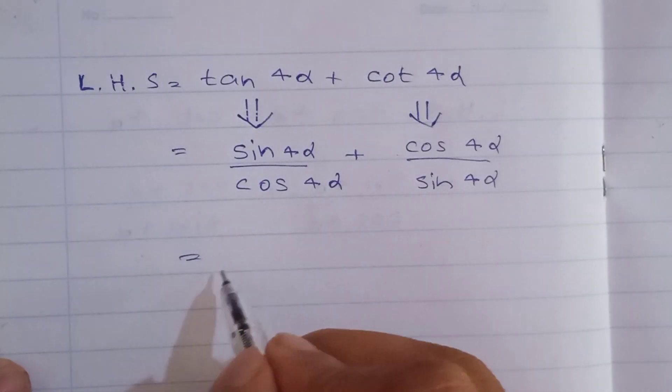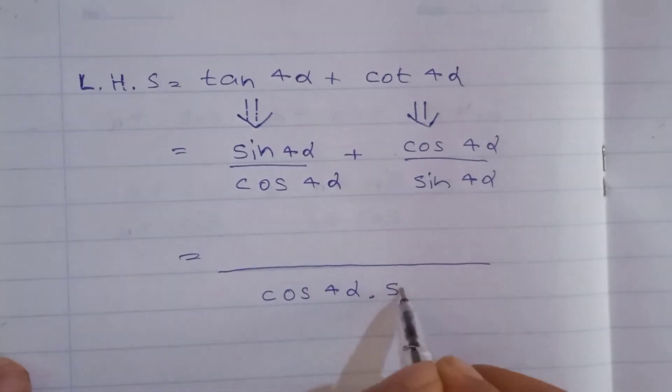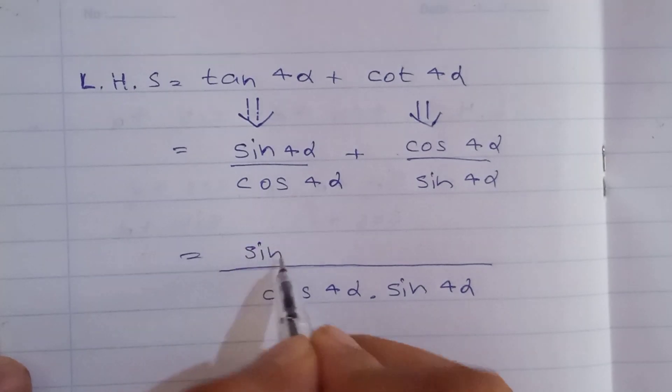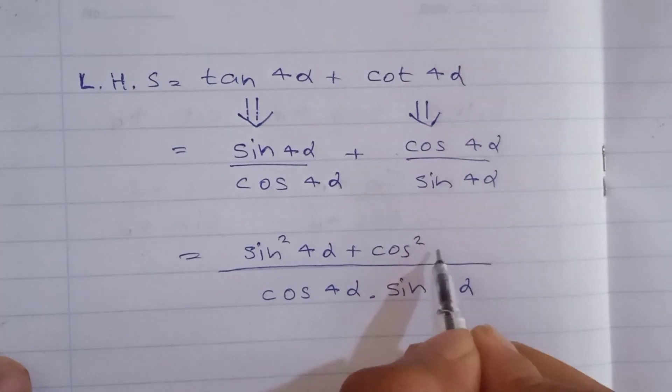Next we can simplify by finding a common denominator of cos 4α multiplied by sin 4α. This gives us sin squared 4α plus cos squared 4α over cos 4α sin 4α.